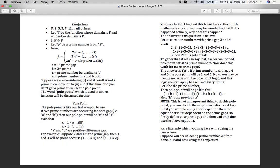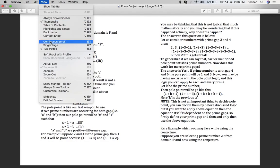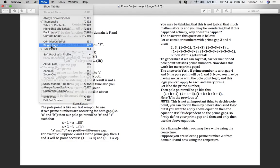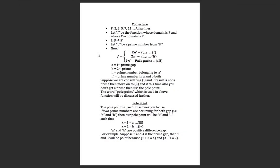Now let me take another example: 19. Multiply 2 by 19 and subtract the previous prime number — this is not equal to a prime. Again, multiply 2 by 19 and subtract the number before the previous prime — also not equal to a prime. Now the last weapon in this case is the pole point, which will be discussed further.